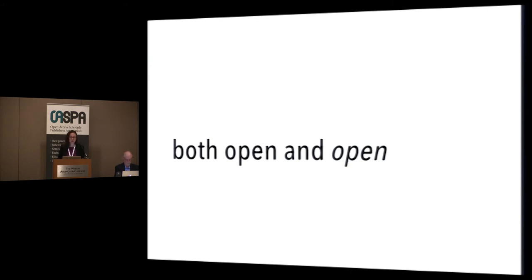How can we create research communities online that invite everyone to participate, that are transparent about their governance and community-oriented in their values, and that remain both technologically and fiscally sustainable? This is one of the places in which the progress that scholarly communication has made toward open access has gotten tangled up in priorities that do not reflect the actual goals of the scholarly community.